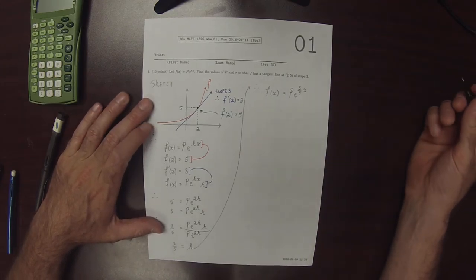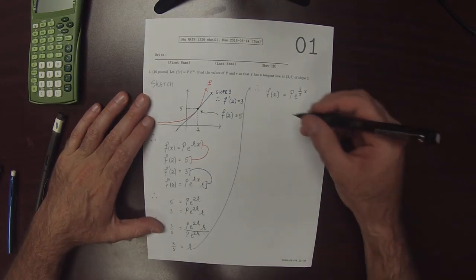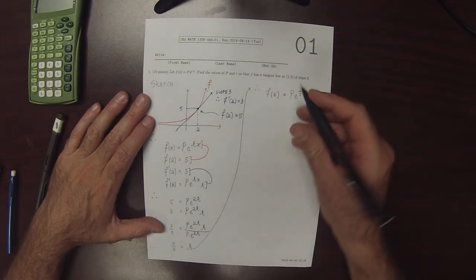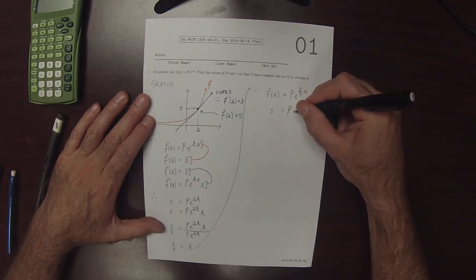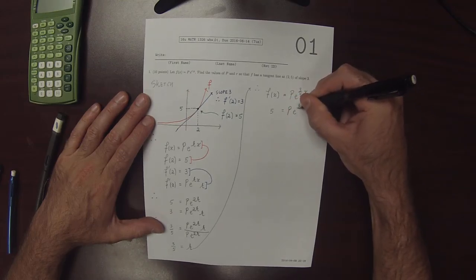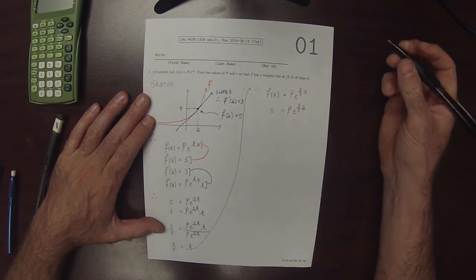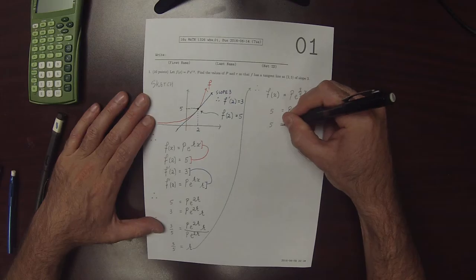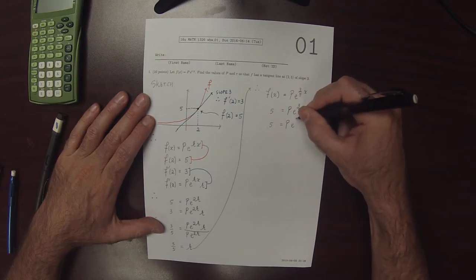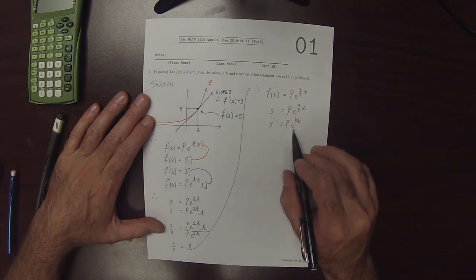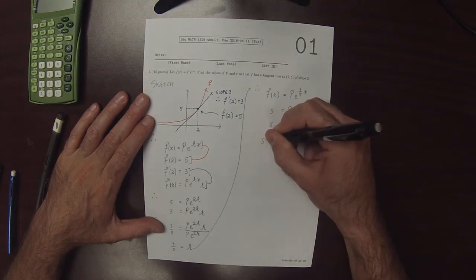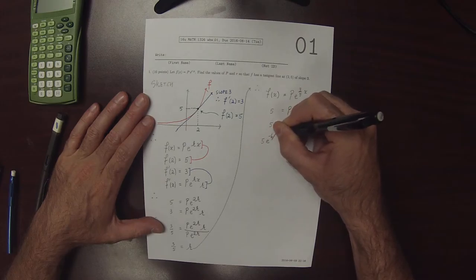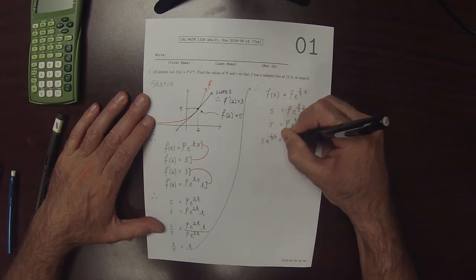We know that when we plug in 2, we're supposed to get 5. So 5 is p e to 3 fifths multiplied by 2. So 5 is p e to 6 fifths. So dividing both sides by e to 6 fifths, that would be 5 e to negative 6 fifths is p.